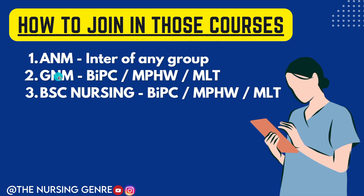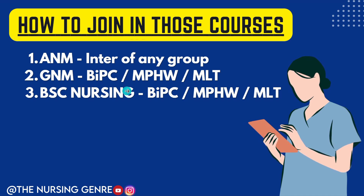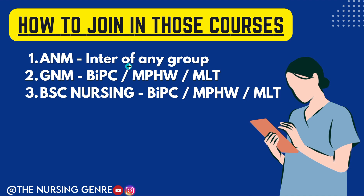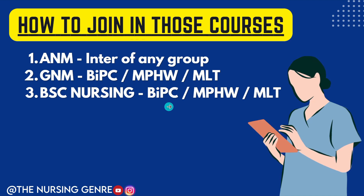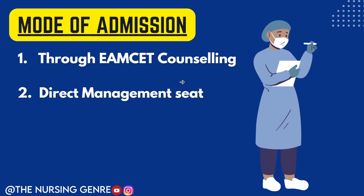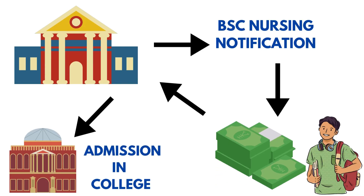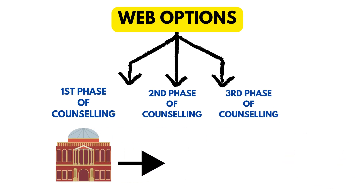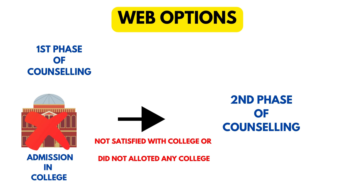How to join those courses? The mode of admission has two options: the first one is counseling and the second one is direct management seat. When you are doing counseling, a notification is released from the university. You can apply for BSc Nursing, release web options — that is, college options. This counseling process is in three phases. In the first phase, you can select colleges.